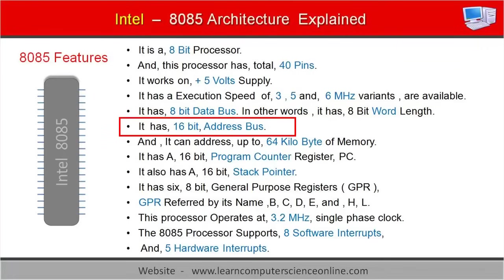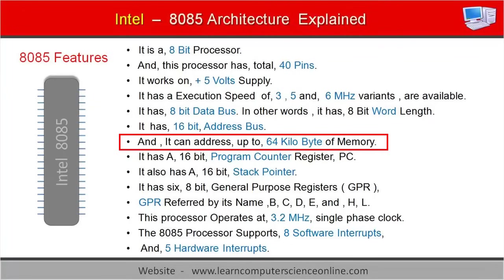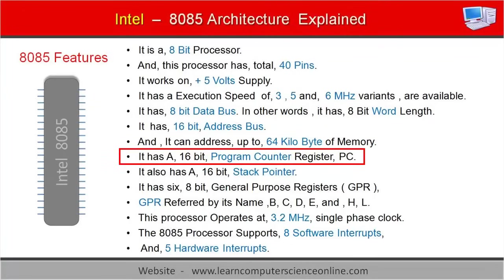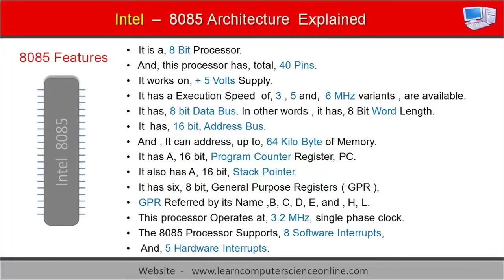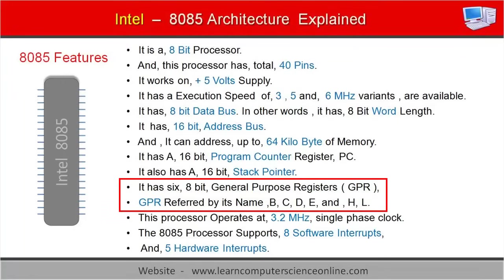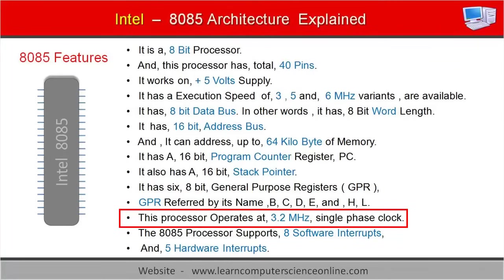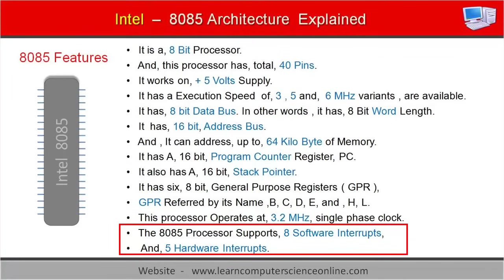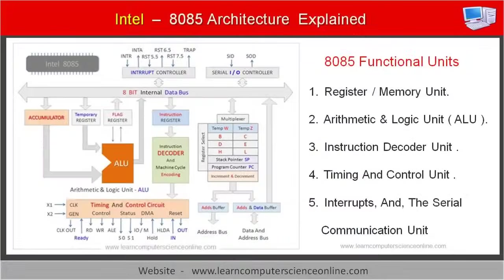The 8085 has a 16-bit address bus and can address up to 64 kilobytes of memory. It has a 16-bit program counter register (PC) and a 16-bit stack pointer. It has 6 general-purpose 8-bit registers named B, C, D, E, H, and L. This processor operates at a 3.2 megahertz single-phase clock and supports 8 software interrupts and 5 hardware interrupts.